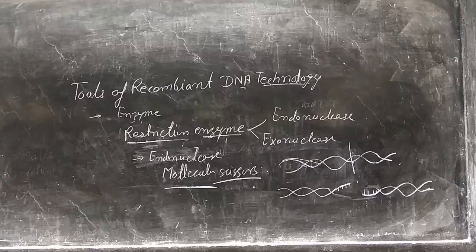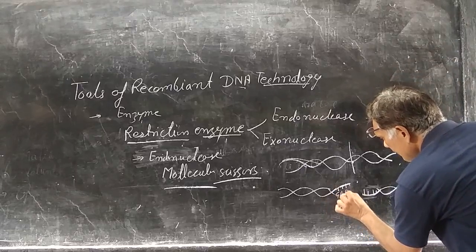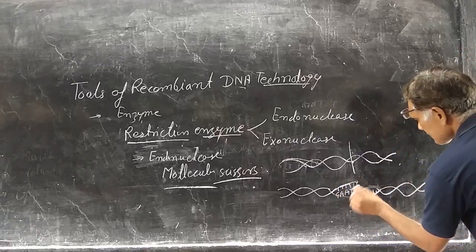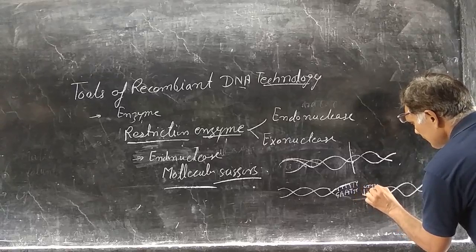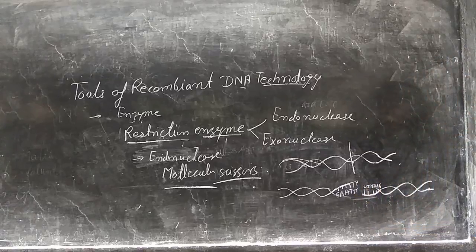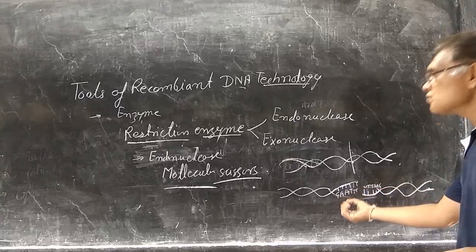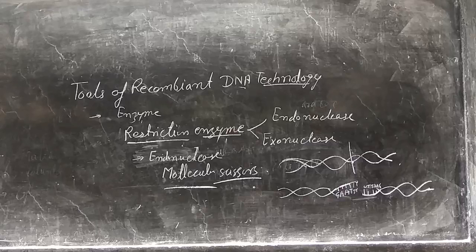Sticky ends means both cut ends have complementary nitrogen base pair sequences — for example, GAATTC on one strand and CTTAAG on the other. Both ends are sticky and will have complementary nitrogen base pairs, so they will attach together. Restriction enzymes cut the DNA from the specific region and form these sticky ends.